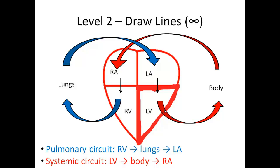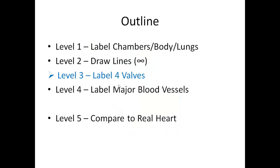One more thing: identify the pulmonary circuit and the systemic circuit. The pulmonary circuit, shown in blue arrows, starts in the right ventricle, goes up and around to the lungs, and ends at the left atrium. The left AV valve divides it from the systemic circuit, which starts in the left ventricle, goes up and around the body, and ends at the right atrium, divided by the right AV valve. Pulmonary refers to the lungs; systemic refers to the body. That completes level two.